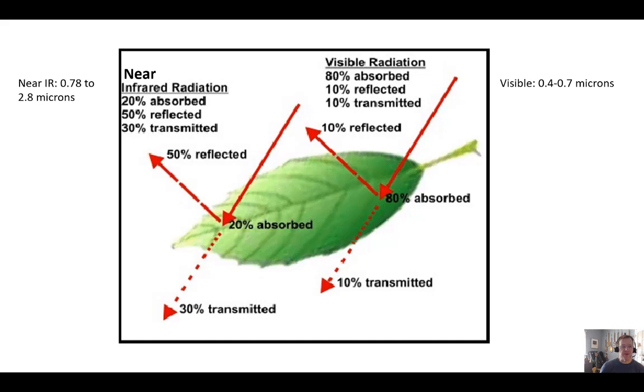If we look at near-infrared radiation, for example, a lot of that is reflected—only about 20% is absorbed and about 30% is transmitted. Whereas over in the visible range, 0.4 to 0.7 microns or 400 to 700 nanometers, you get a lot of absorption and not very much reflected or transmitted radiation. By studying the reflectance, absorptions, and transmittance in these different wavelengths, we can deduce things about the health of the leaf.